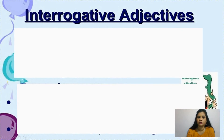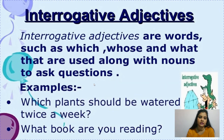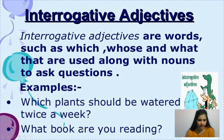Next is interrogative adjective. You know what interrogative means — it involves questions. Interrogative adjectives are words such as 'which,' 'whose,' and 'what' that are used along with nouns to ask questions. Interrogative adjective means where we ask a question, but the key is that this word must be with a noun. Example: 'Which plant should be watered twice a week?' — 'plant' is the noun and 'which' is the interrogative adjective. 'What book are you reading?' — 'book' is the noun and 'what' is the interrogative adjective.